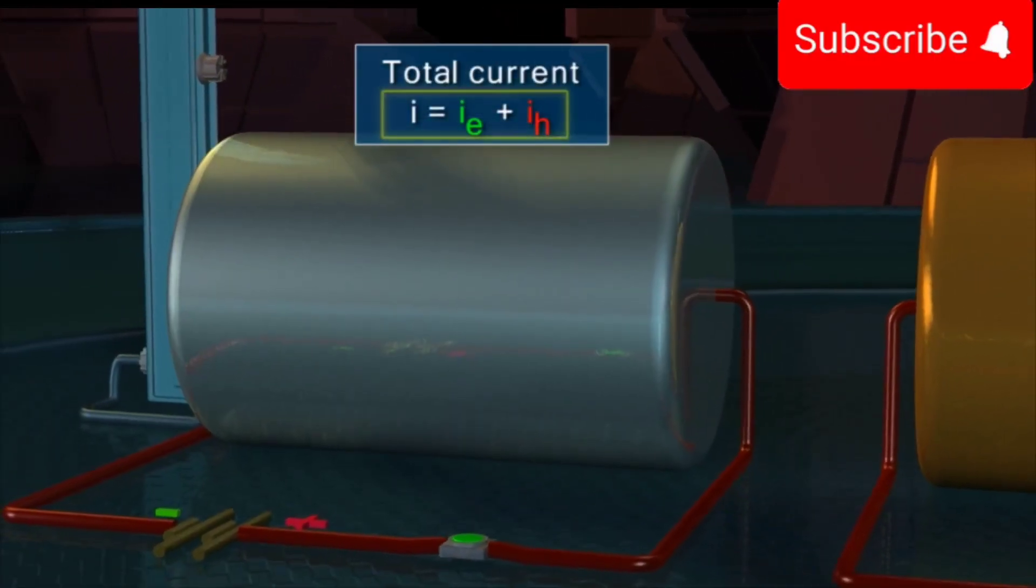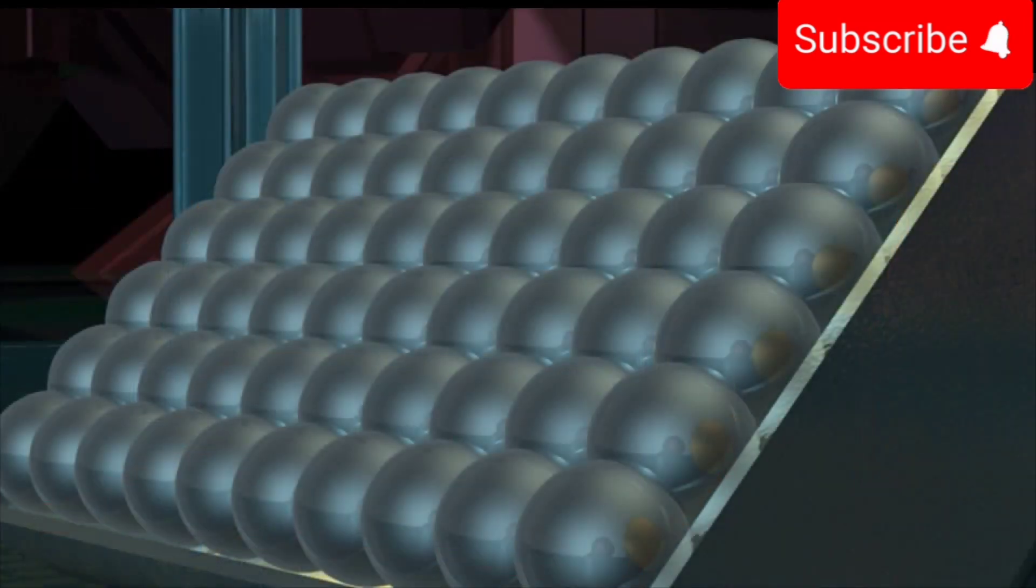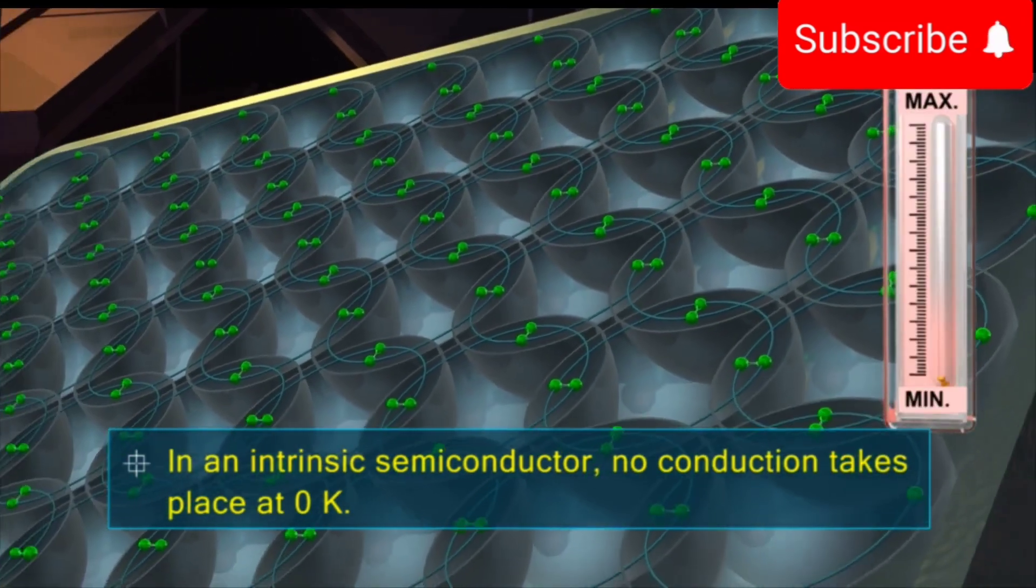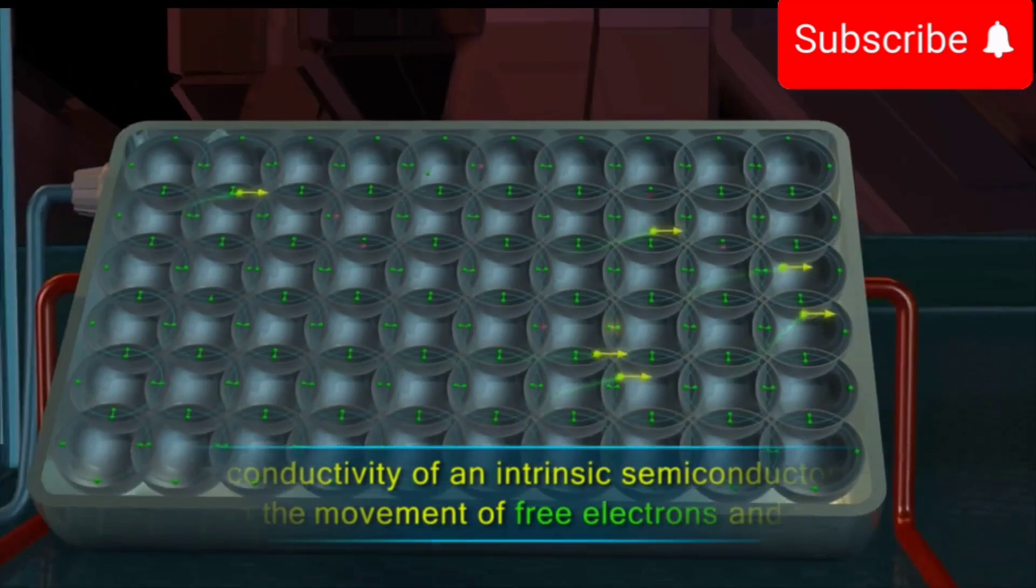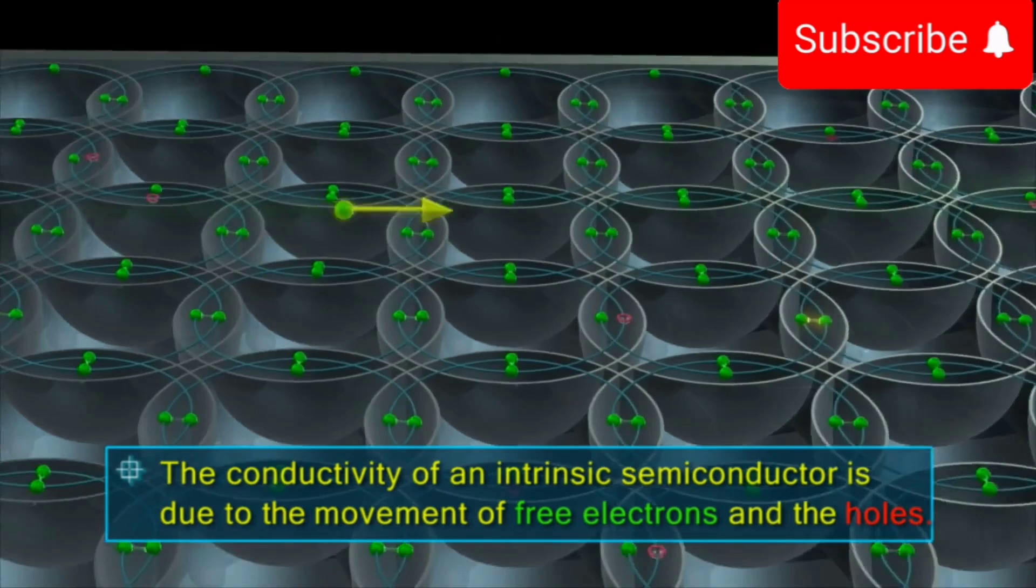Mathematically, I = Ie + Ih. Thus, we have learnt that intrinsic semiconductors are pure semiconductors. In an intrinsic semiconductor, no conduction takes place at zero Kelvin. The conductivity of an intrinsic semiconductor is due to the movement of free electrons and the holes.